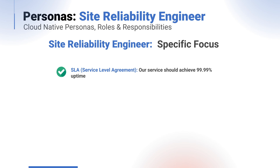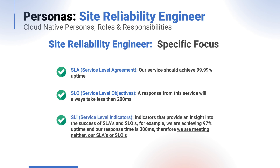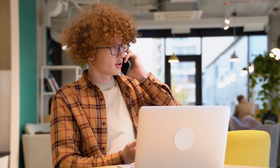SLAs — service level agreements — for example, our service should achieve 99.99% uptime. SLOs — service level objectives — for example, a response from this service will always take less than 200 milliseconds. SLIs — service level indicators — are indicators that provide insight into the success of SLAs and SLOs. For example, we are achieving 97% uptime and our response time is 300 milliseconds, therefore we are meeting neither our SLAs nor our SLOs. SREs are also responsible for the management and handling of an incident management process and for coordinating and deriving the lessons learned post-incident.